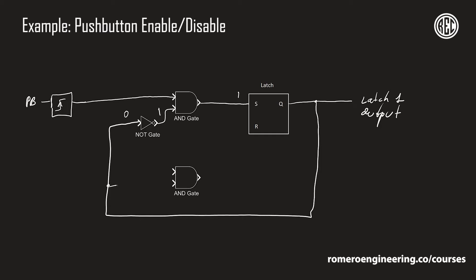If the latch is originally a logical one, we don't use a NOT gate on the second AND gate — we just AND the latch output directly with the button pulse and feed that into the RESET of the latch. So pressing the button when the latch is one will reset it to zero. This toggles it every time we press the button, giving us a way to use the same button to both enable and disable the same relay function.